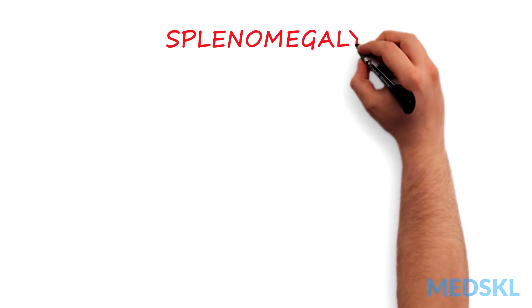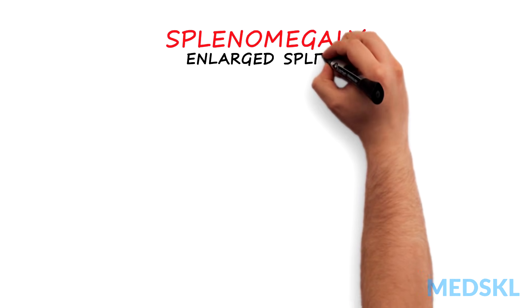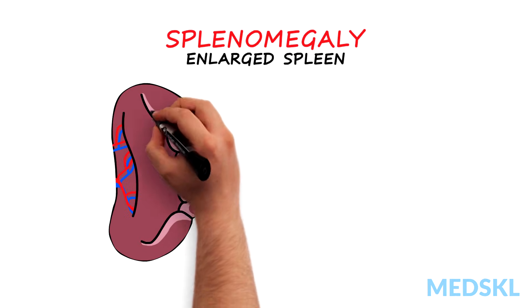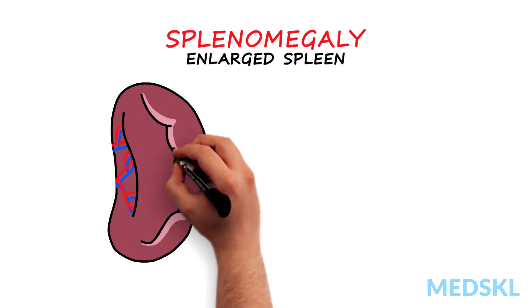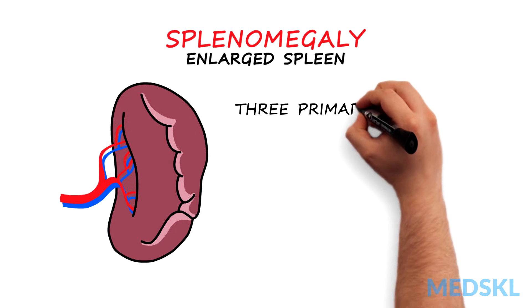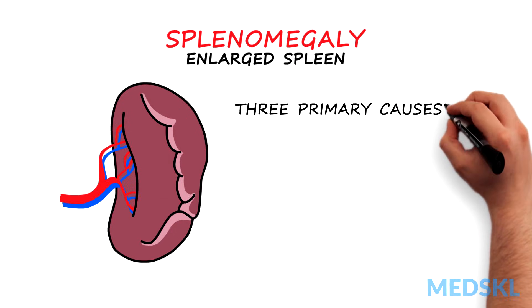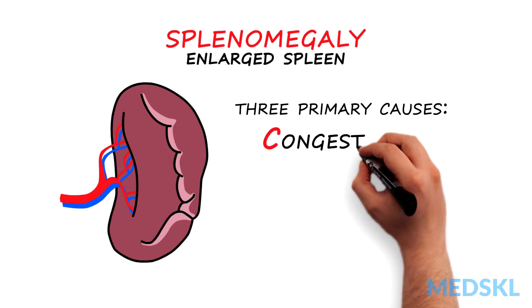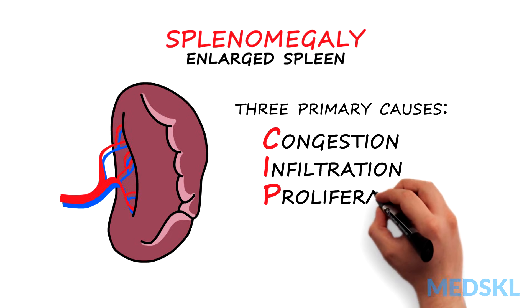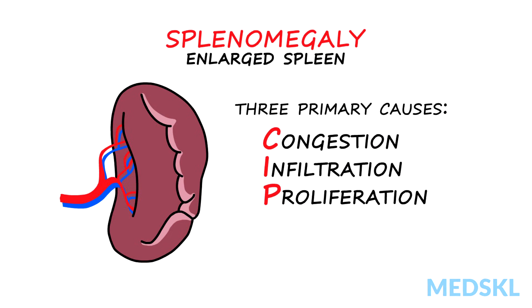An enlarged spleen is a physical exam finding that has a broad differential. Let's investigate the three primary causes: congestion, infiltration, and proliferation. We can remember it as CIP.